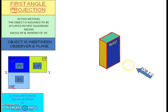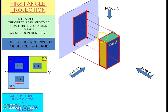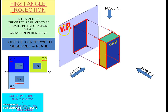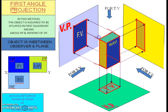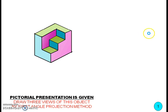To get the front view, the observer should look from the front of the object and project these points to the VP to get the front view. Likewise, we are projecting four points to the HP for getting the top view, and another four points to get the side view in the VP.